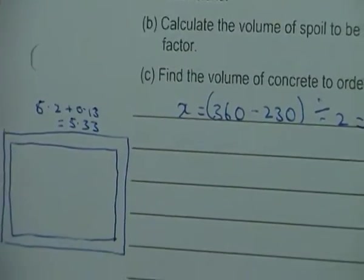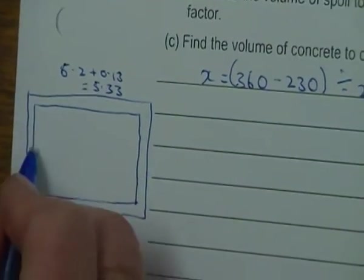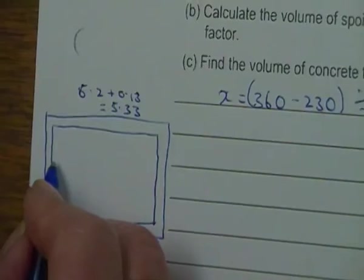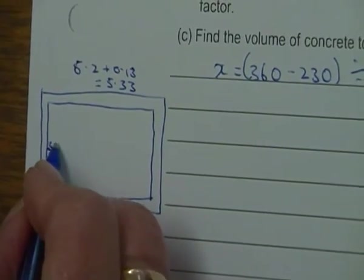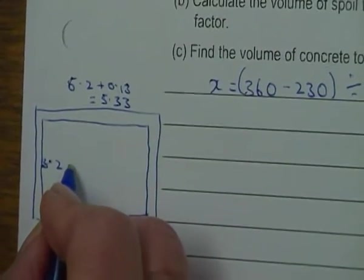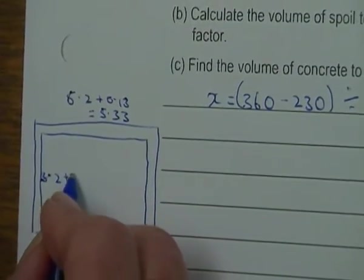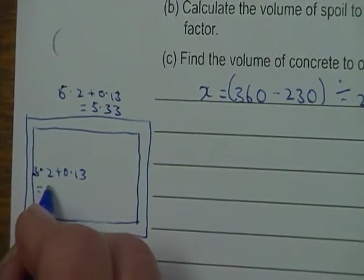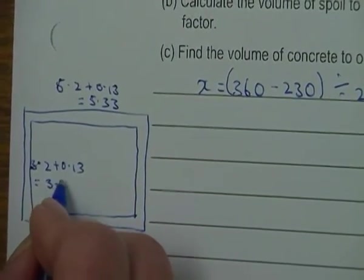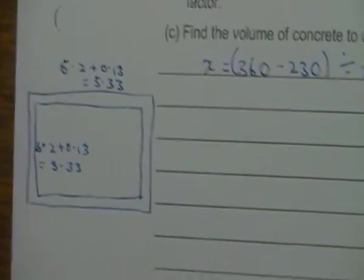That's my new dimension for my footing. So on the width of the wall, it's going to be 3.2, and I'm adding 65 and 65, so plus 0.13, and it's going to be 3.33.